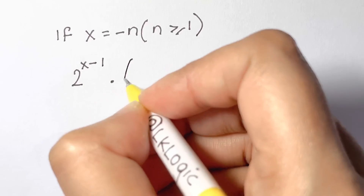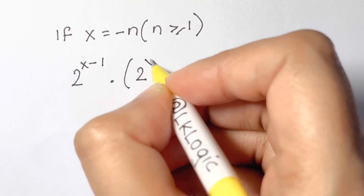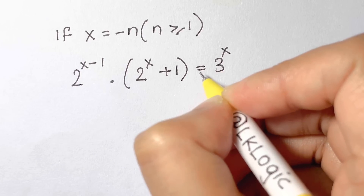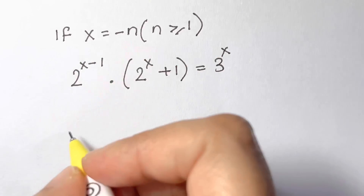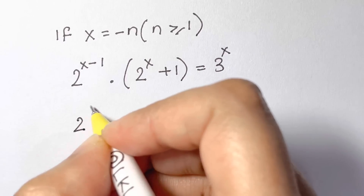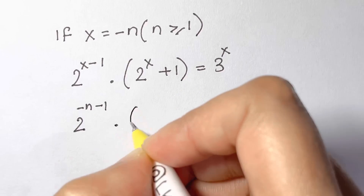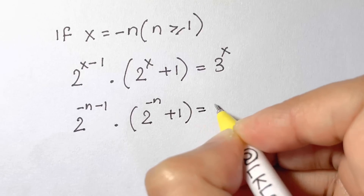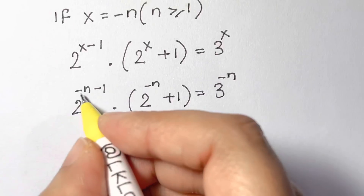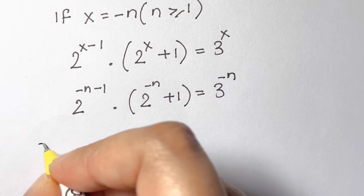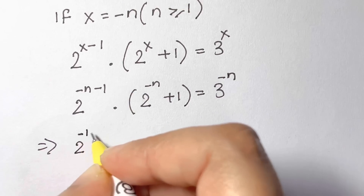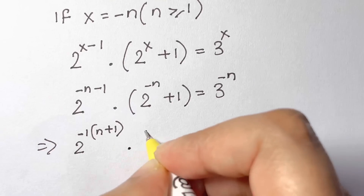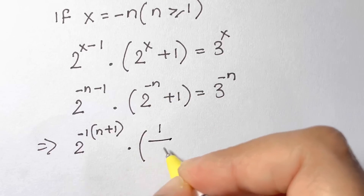Equation 1 is 2 to the power of (x minus 1) times (2 to the power of x plus 1) equals 3 to the power of x. Substituting x equal to negative n: 2 to the power of (minus n minus 1) times 2 to the power of (minus n plus 1) equals 3 to the power of minus n. Taking out negative 1 as common, 2 to the power of minus 1 leaves (n plus 1) inside, and 2 to the power of minus n is the reciprocal 1 over 2 to the power of n.